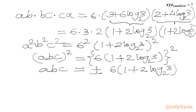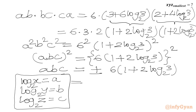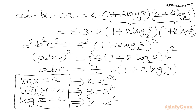Now we have two values of ABC. Recalling our substitution: log X base 2 is A, log Y base 2 is B, log Z base 2 is C. From these, X equals 2 power A, Y equals 2 power B, Z equals 2 power C.